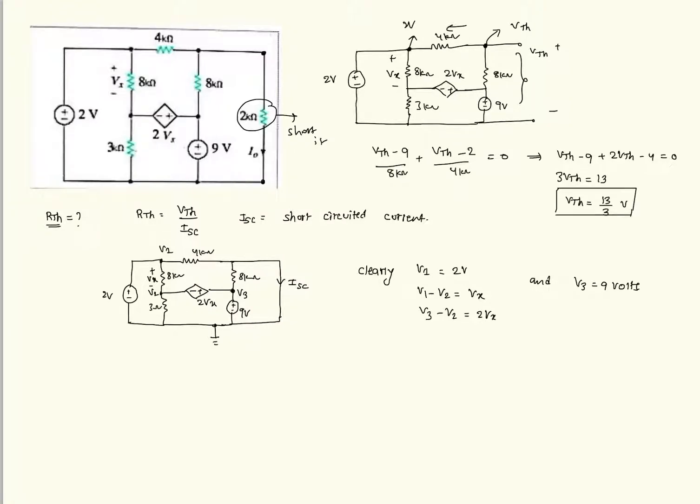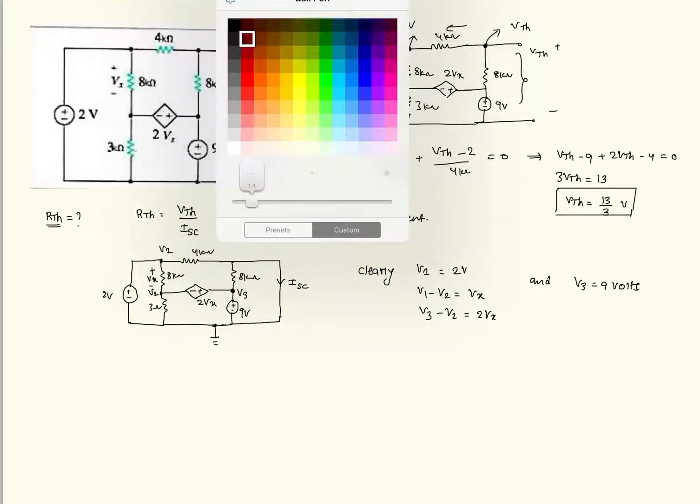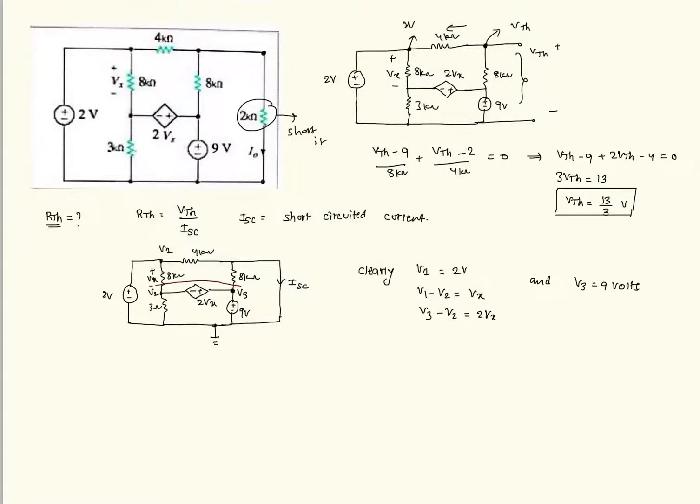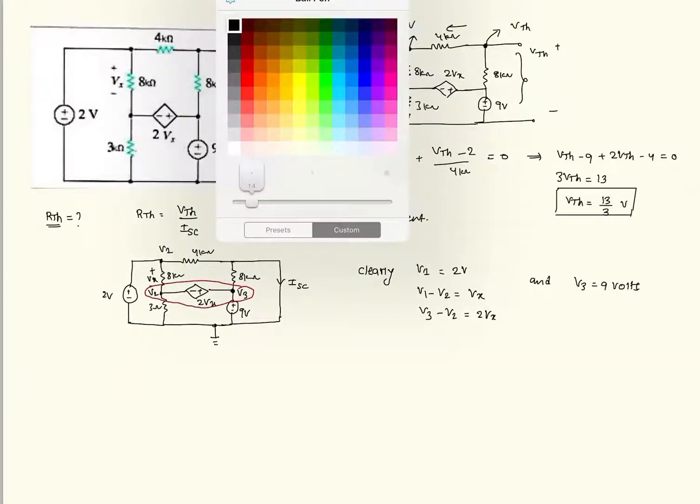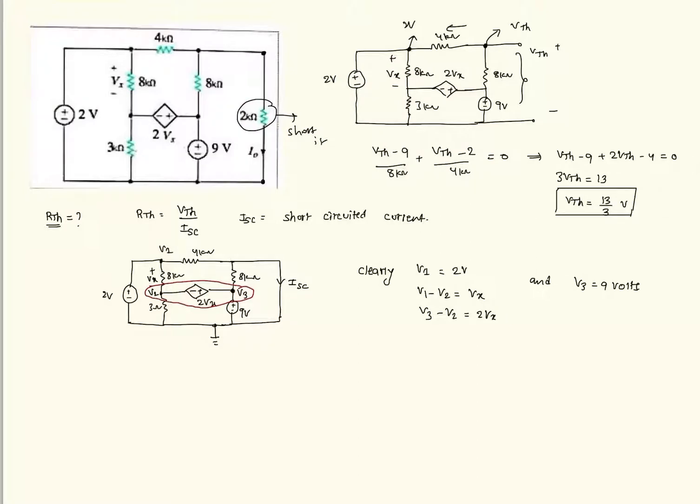V3 is nothing but 9 volts. Clearly we have written here. V1 is 2 volts. Clearly we have written here. And V1 minus V2 is Vx. V2 minus V3 minus V2 which is 2 Vx which is highlighted here. So now by solving these equations, by solving clearly Vx is equals to 7 volts. And this is not at all required actually.